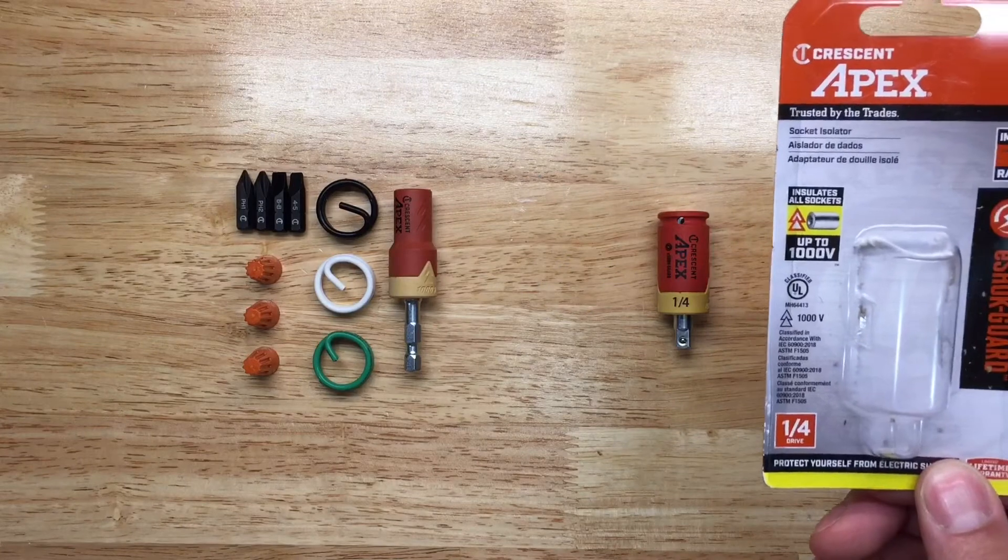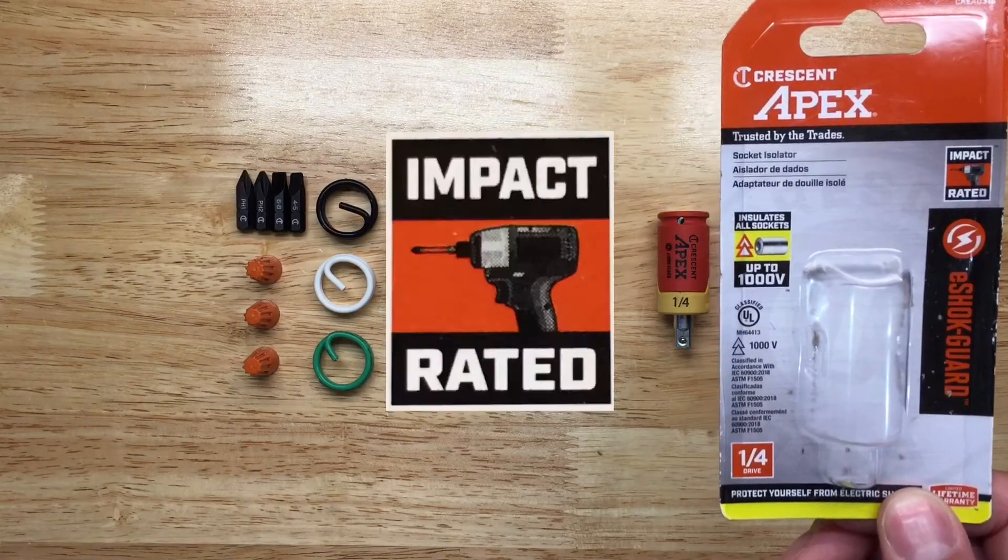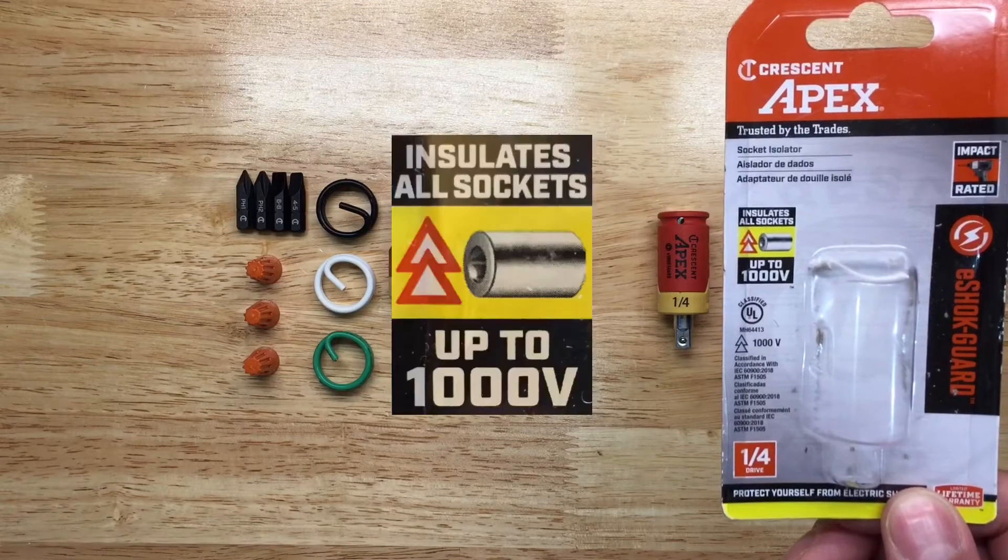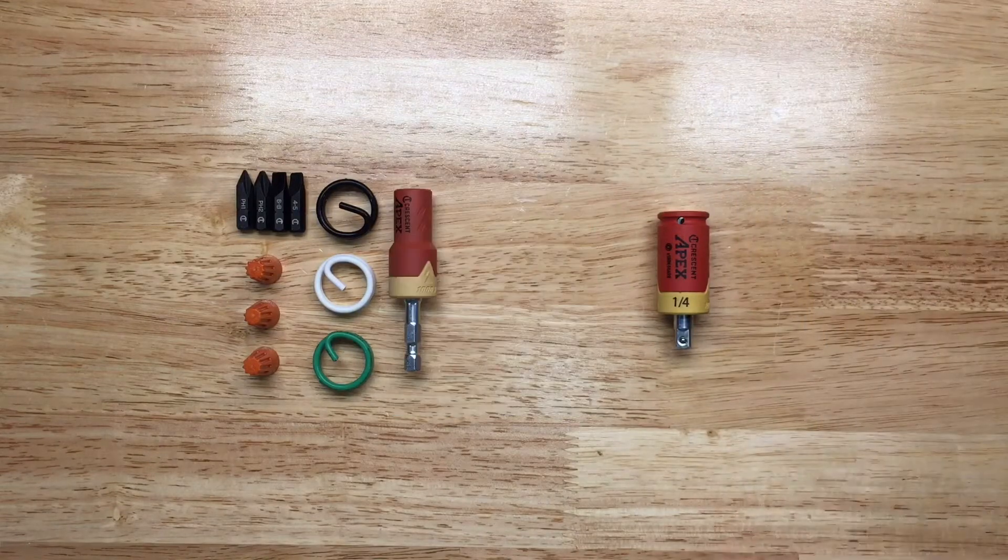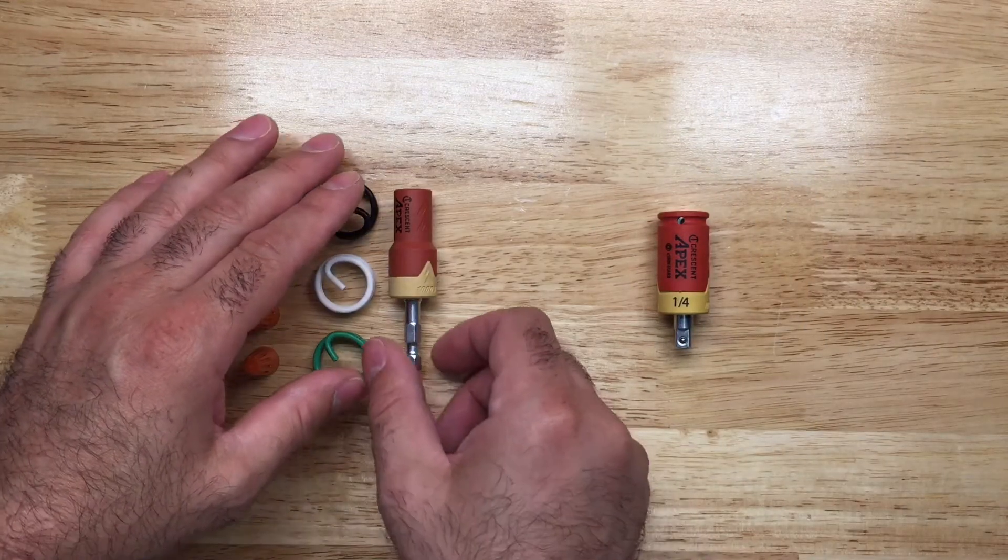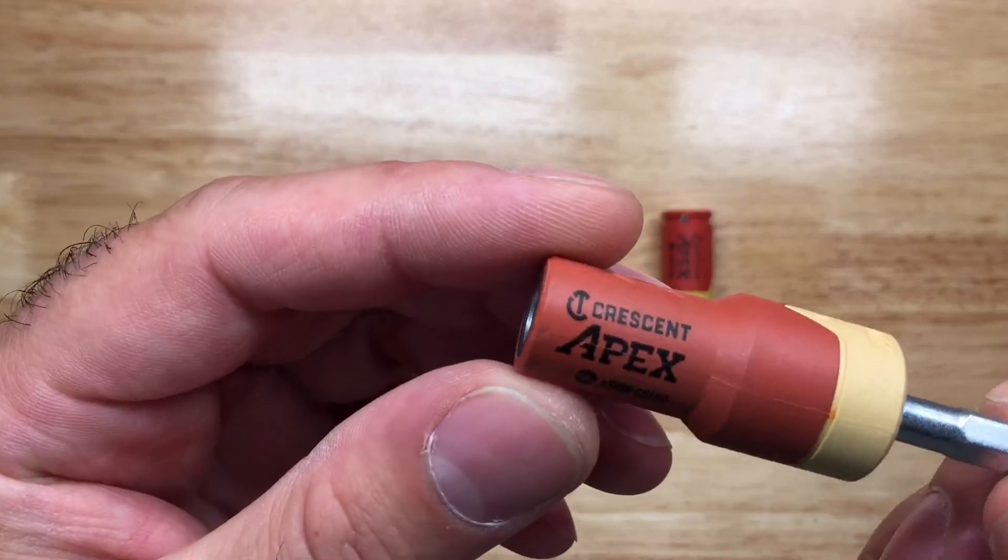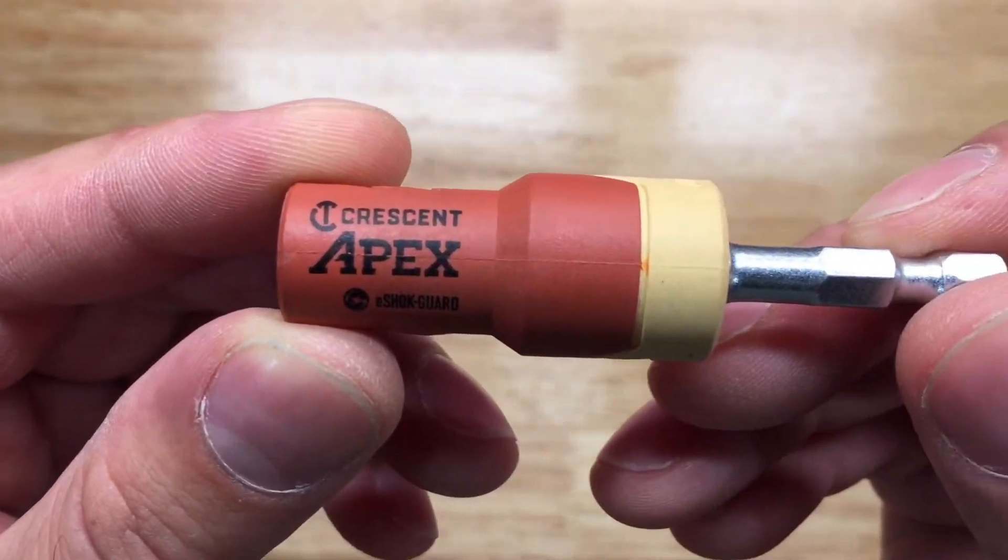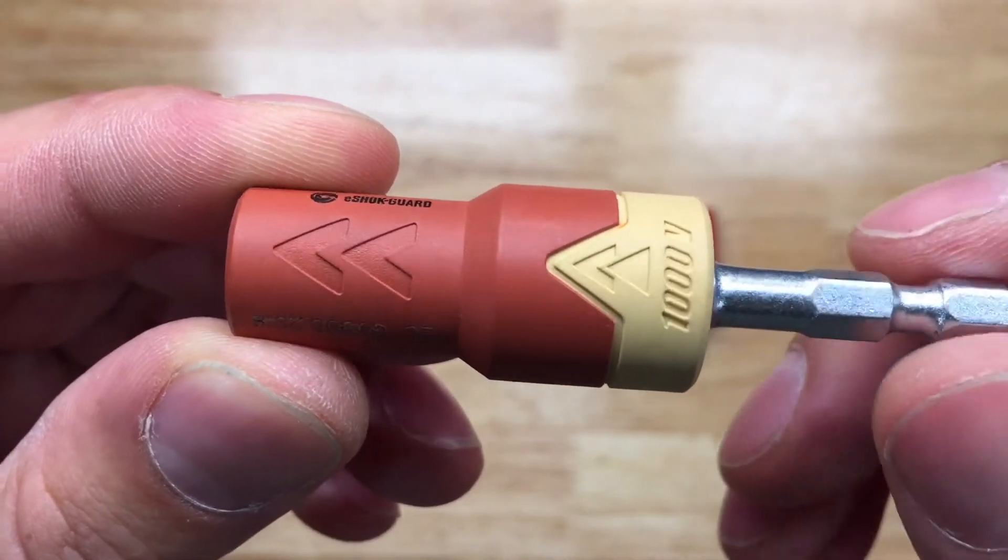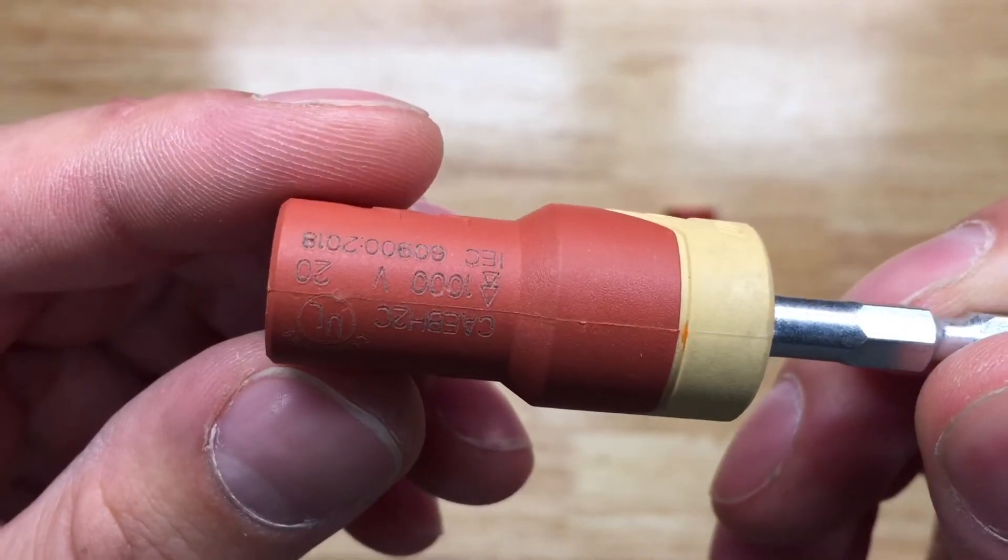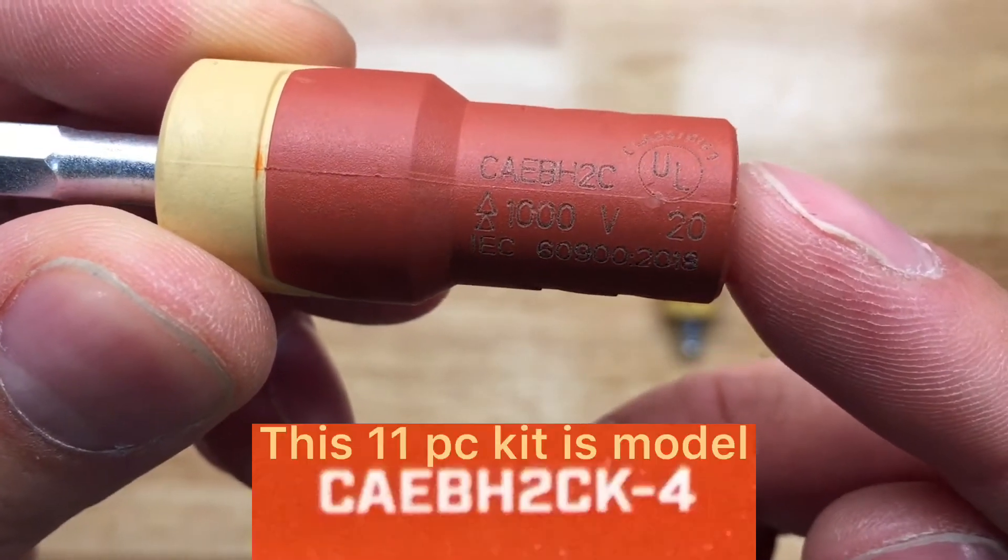Looking closely at the isolated bit holder, there's Crescent branding and the 1,000 volt stamping. Over here there's lettering with a model number, a UL listing, and an IEC code. There's a magnetic bit holder here, and on the tail, this one's for your impact gun.